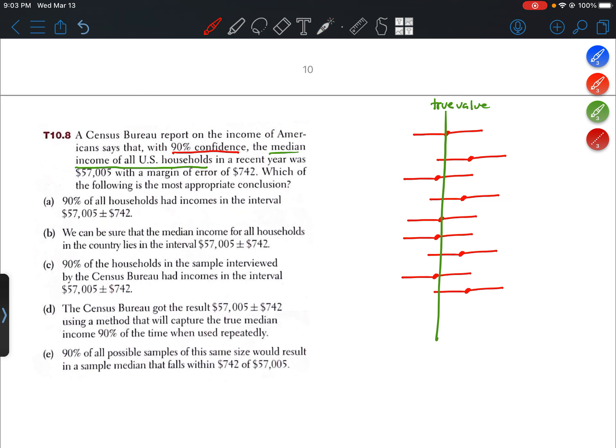All right. So A didn't do it. B, we can be sure that the median income for all households in the country lies in the interval $57,005 plus or minus $742. We cannot be sure about it because sometimes we'll get an interval that doesn't capture the true value. In fact, that should happen about 10% of the time, 100 minus 90. So B is out.